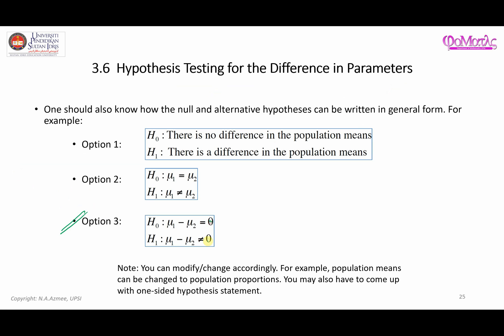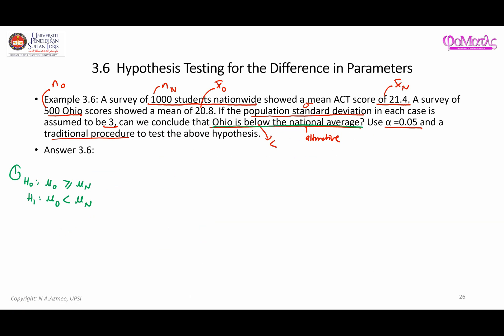Normally I prefer option three, where you have a value on the right-hand side of the equation or inequality. So I'll change to option three. Subtracting both sides by mu nationwide gives: H0: mu Ohio minus mu nationwide ≥ 0, and H1: mu Ohio minus mu nationwide < 0.